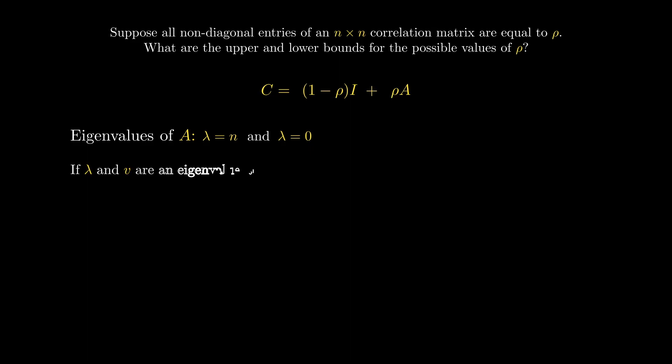Now, if lambda and V are an eigenvalue and corresponding eigenvector of A, then by the definition of eigenvalues, A times V must equal lambda times V. We can use this fact to help find the eigenvalues of C. Let's multiply this vector V on the left by C, giving us 1 minus rho times the identity matrix plus rho times A, all multiplied by V.